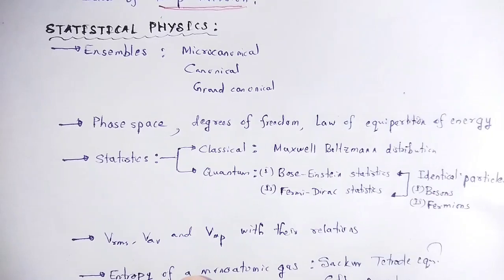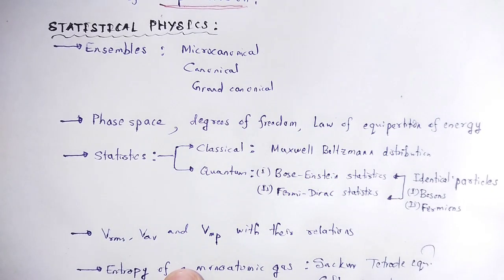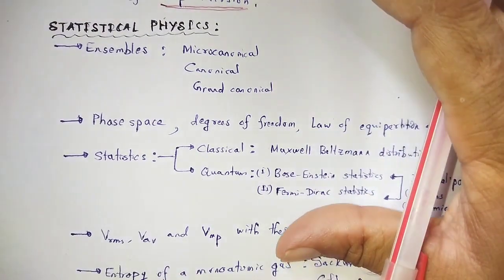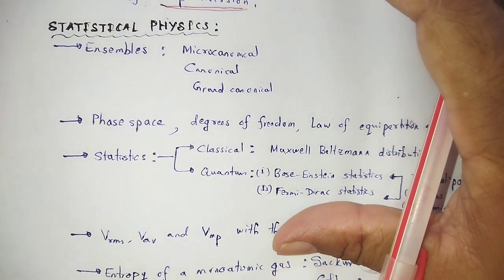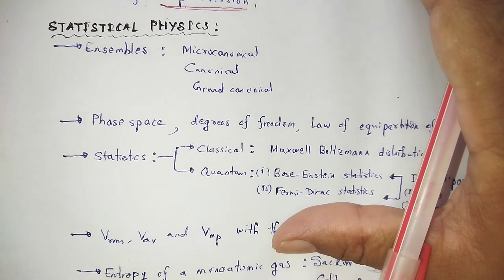Next, statistical physics. In statistical physics, we have different types of ensembles: microcanonical, canonical, and grand canonical. These ensembles have different characteristics.